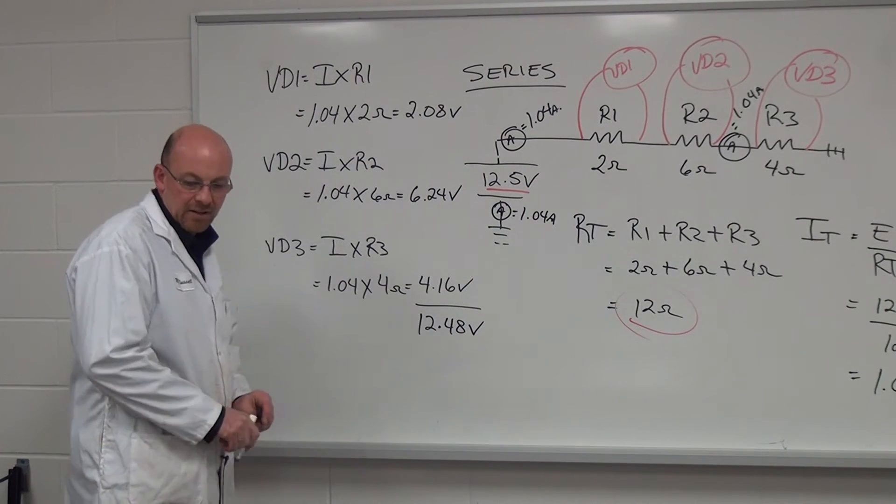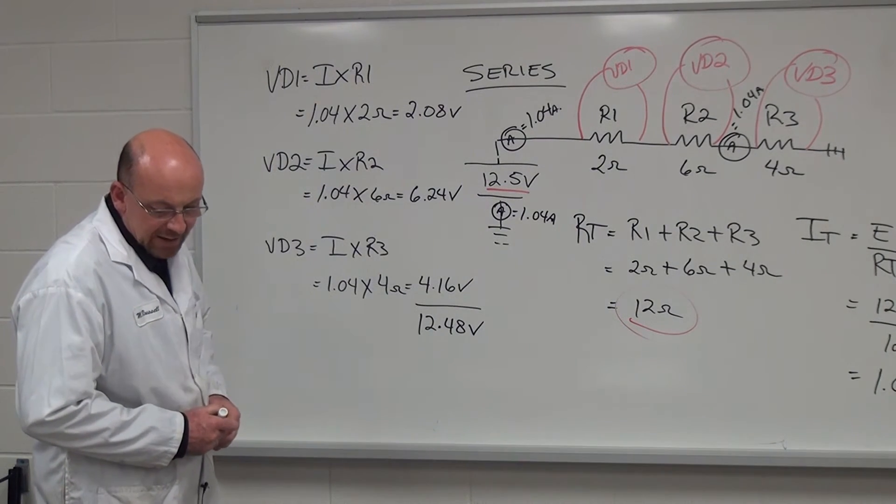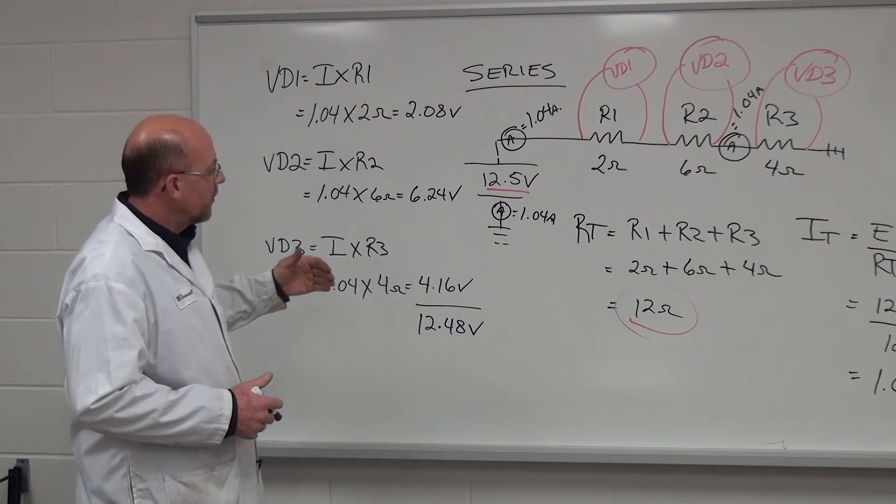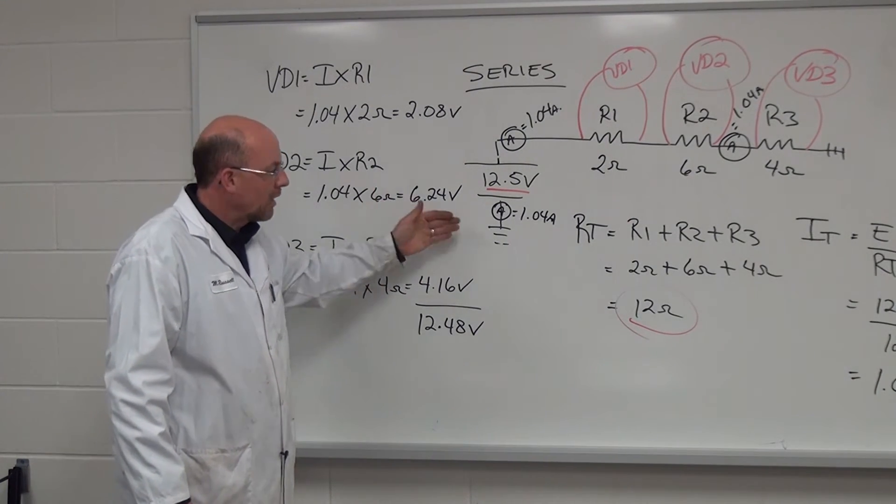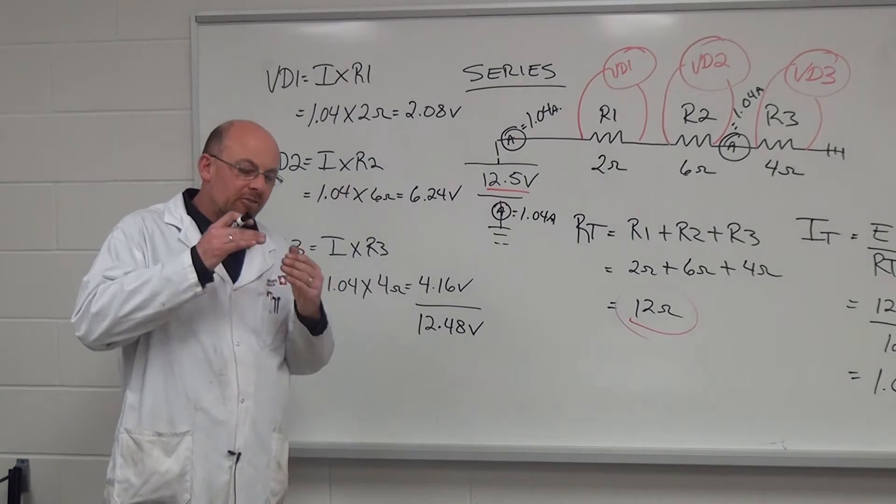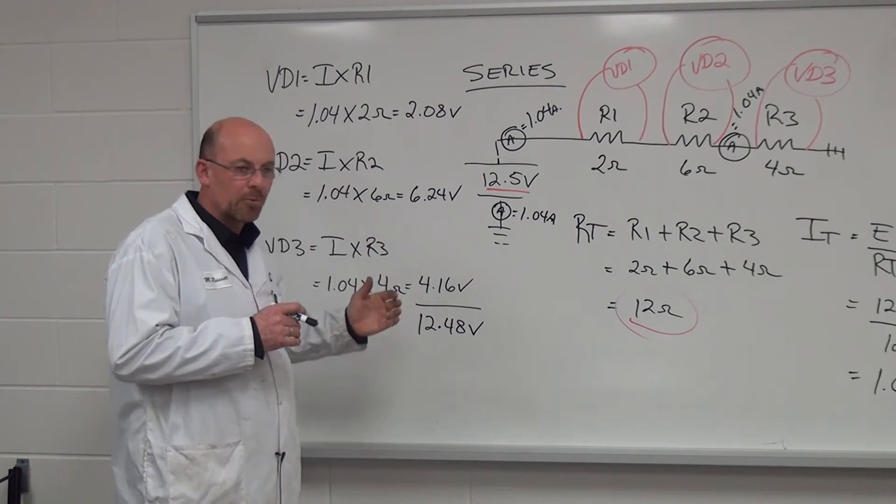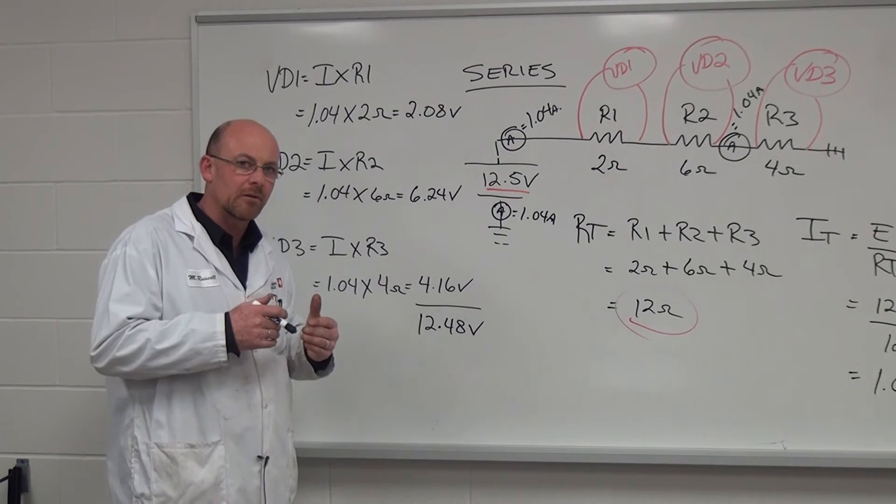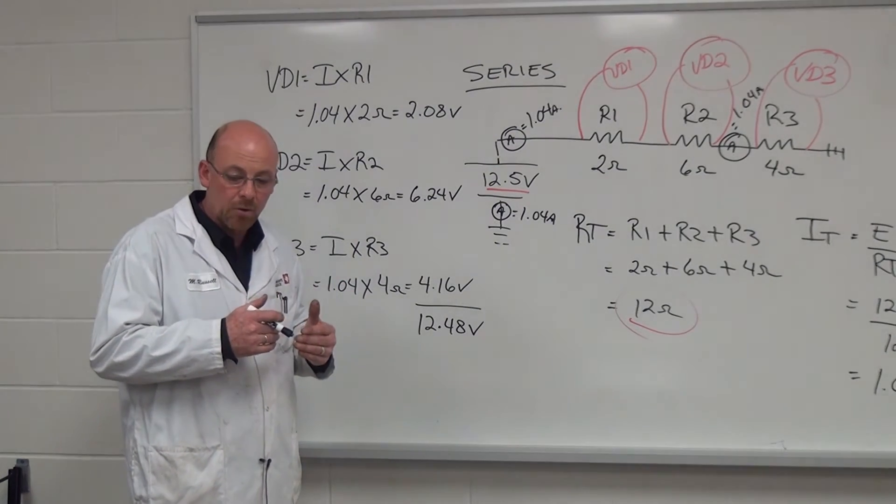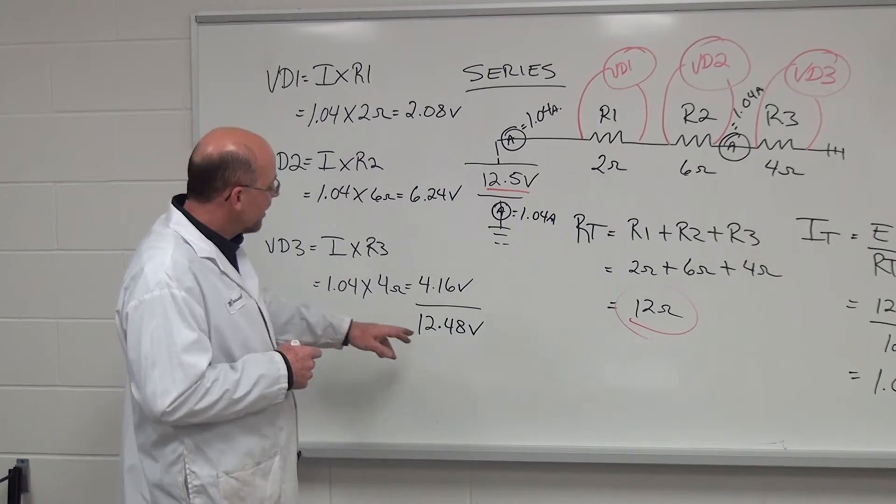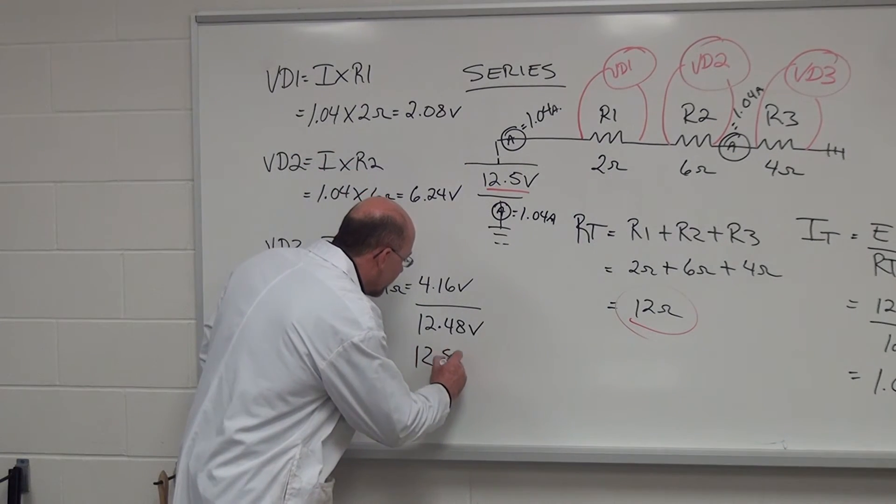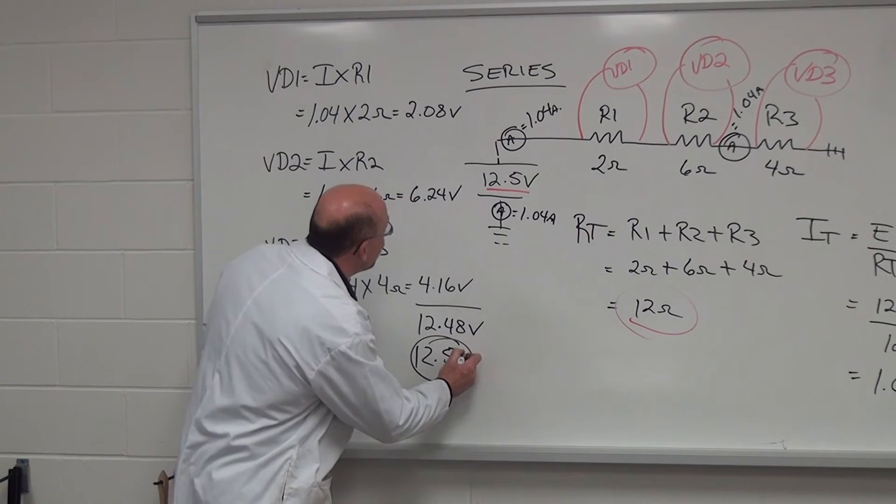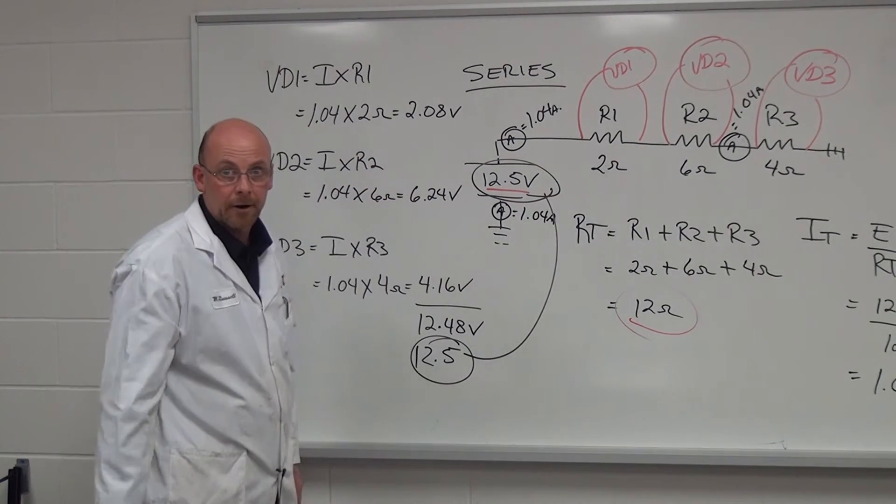And in this particular case, understanding that there is some rounding involved up or down, and whenever we do calculations, there is going to be a small variation depending on the decimal place and whether a particular individual has rounded up or down. So in this particular case, if we were to round up, we would make this 12.5, giving us exactly what our source voltage is right here.